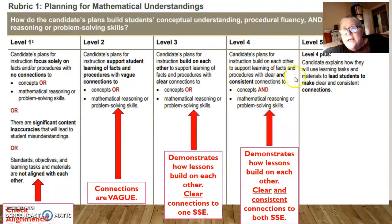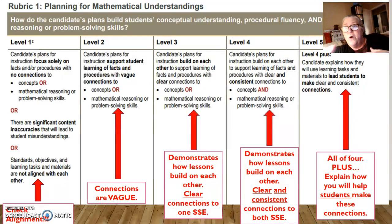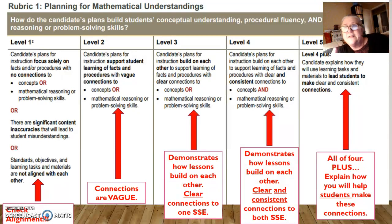To get to a five, you need the four plus you need to explain how students are going to use the learning tasks and materials to lead them to make clear connections themselves. It's not just a matter of you making the connections and telling them — 'look at this and see how these are connected' — that's a four. But when you get the students to make that connection themselves, that's a five. So you say, 'Who can see how these things are connected?' and a student raises their hand and answers. That's your five.